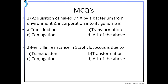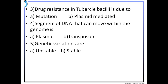Third question: drug resistance in tubercle bacillus is due to? Tuberculosis is one of the most common diseases in India. The answer is mutation. Mutation is a sudden change in the genomic sequence, and tubercle bacillus has suddenly developed resistance to rifampicin, so it is considered a mutational change.